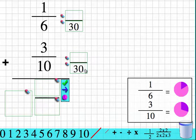So 1 sixth is 5 thirtieths and 3 tenths is 30 divided by 10 is 3, 3 times 3 is 9. So my answer is 14 thirtieths.